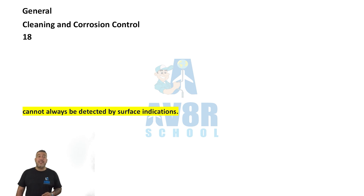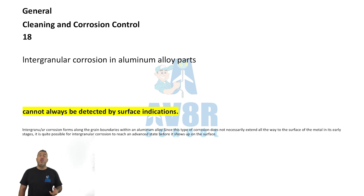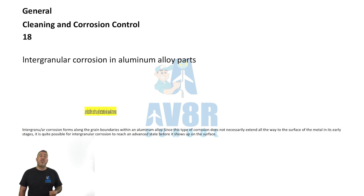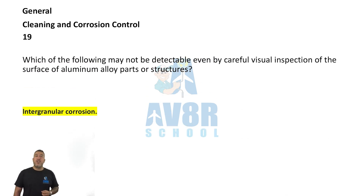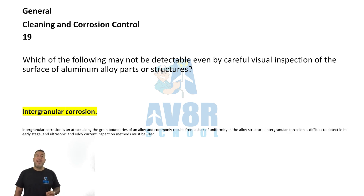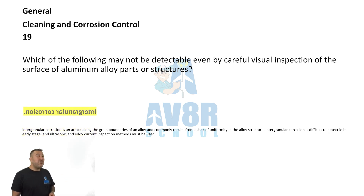Number 18: cannot always be detected by surface indications. Intergranular corrosion in aluminum alloy parts cannot always be detected by surface indications. Number 19: intergranular corrosion. Which of the following may not be detectable even by careful visual inspection of the surface of aluminum alloy parts or structures? It's intergranular corrosion.